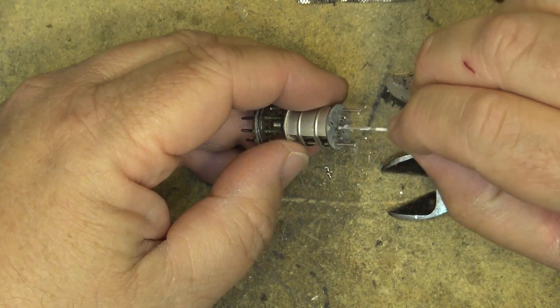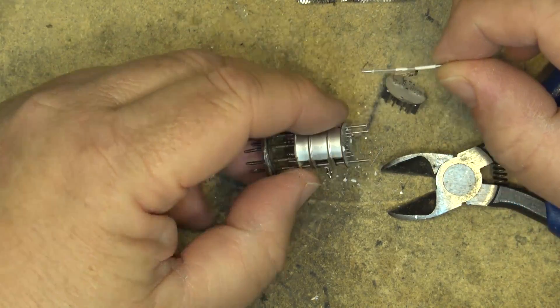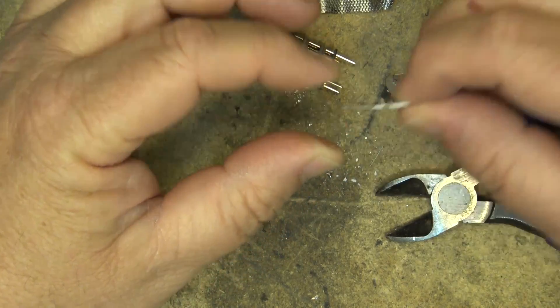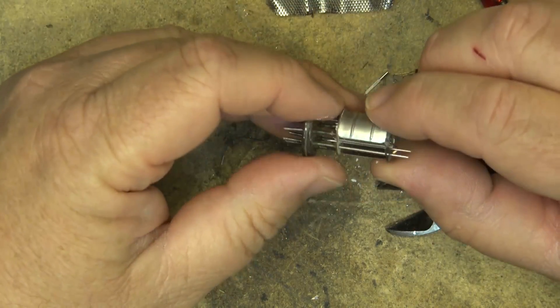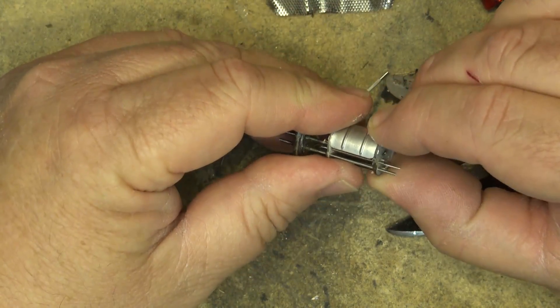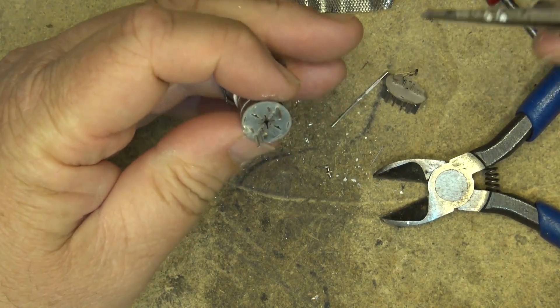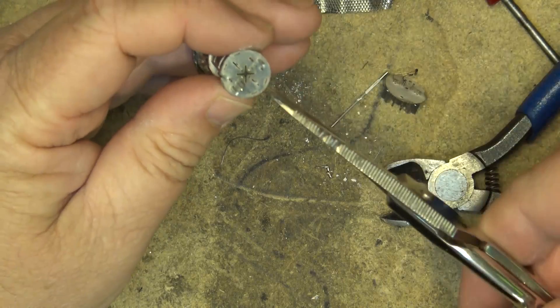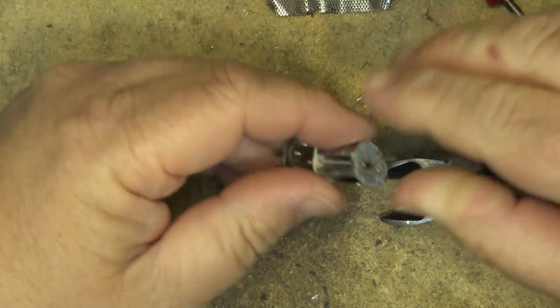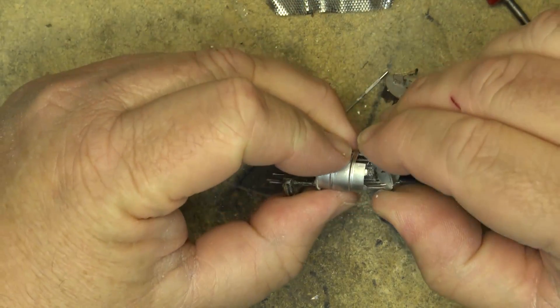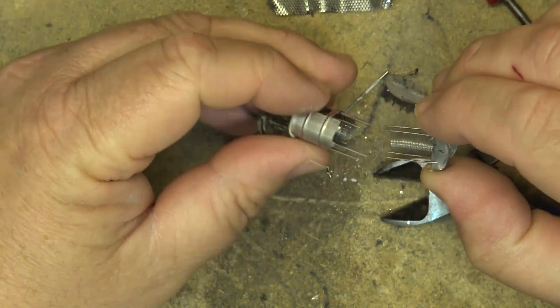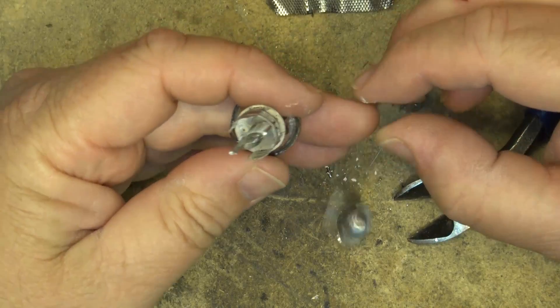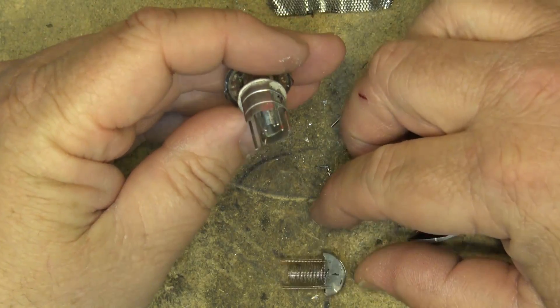We'll remove the top insulator here. And this here is the indirectly heated cathode. The filament itself actually goes through this little tube. It's just a metal tube. This is your cathode. This is your cathode. There's the grid, there's one of the grids. There's two more grids inside here it looks like.